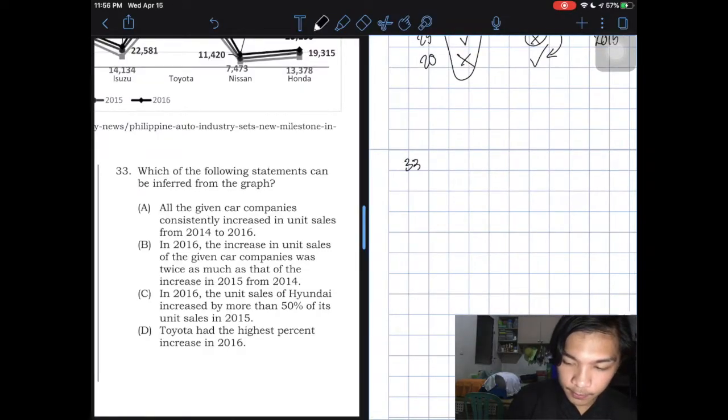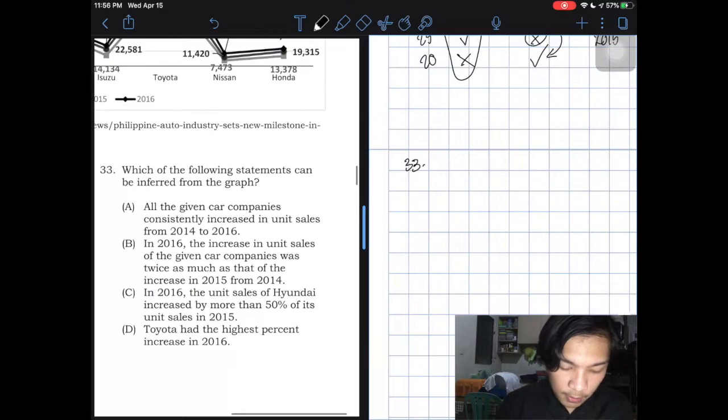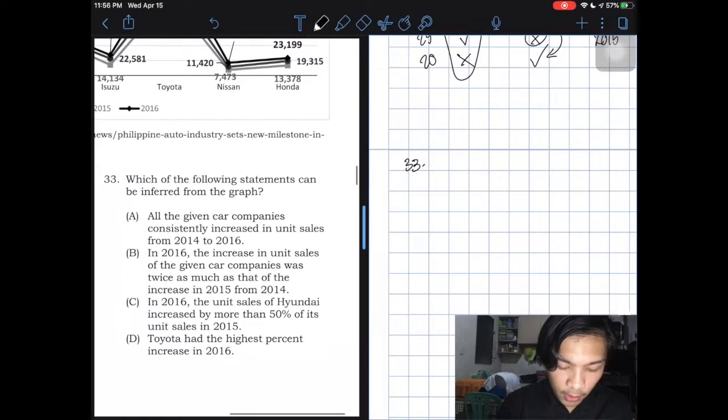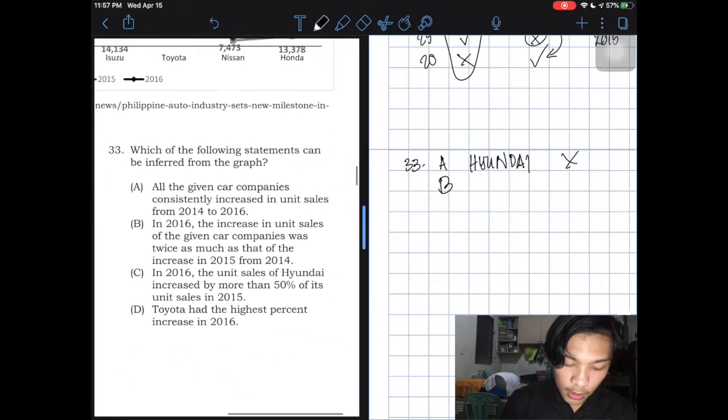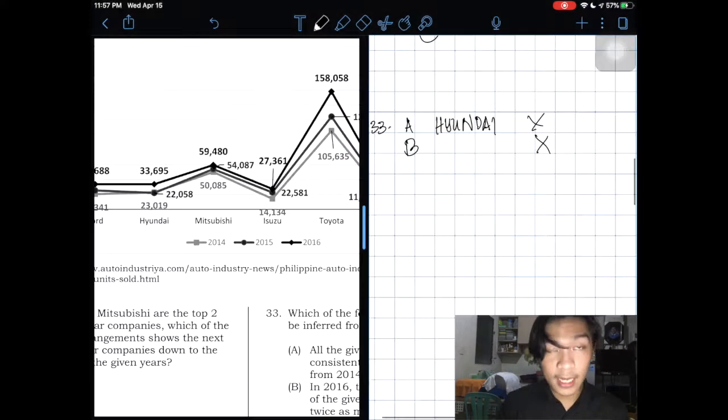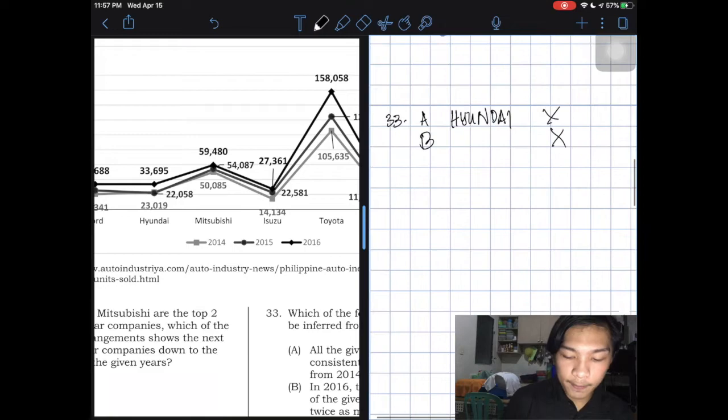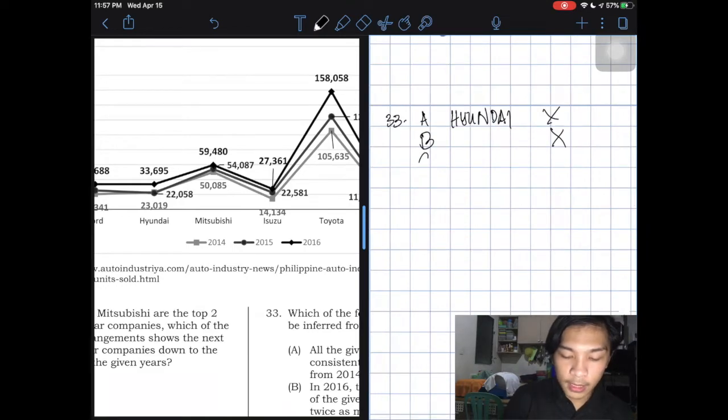Number 33, which of the following statements can we inferred from the graph? All of the given car companies consistently increase in unit sales. Based on what we checked earlier, Hyundai did not increase. So letter B, in 2016, the increase in unit sales of a given car company was twice as much as that of the increase in 2015 and 2014. Again, in Hyundai, it did not increase in 2015, the value actually decreased. So letter B is wrong.